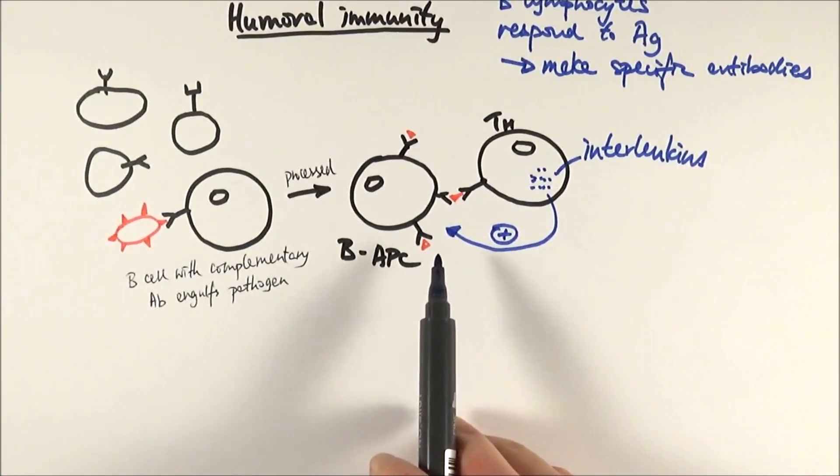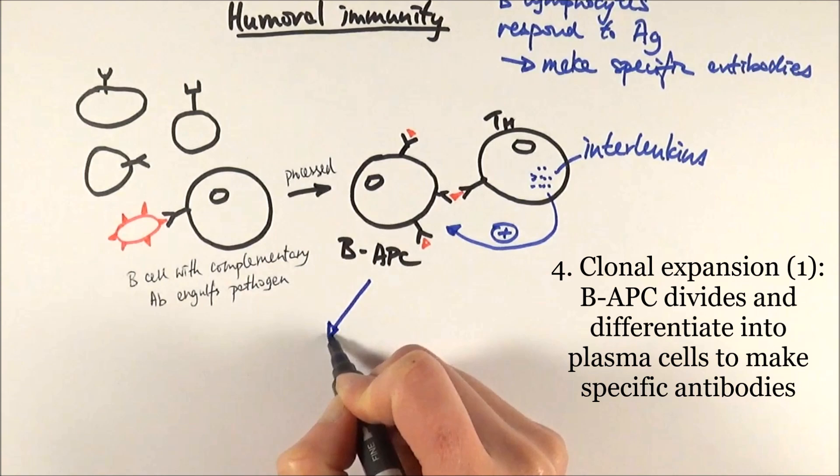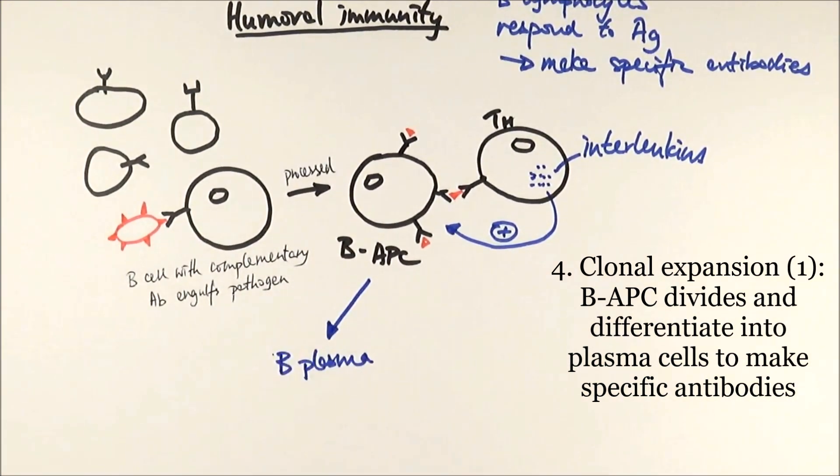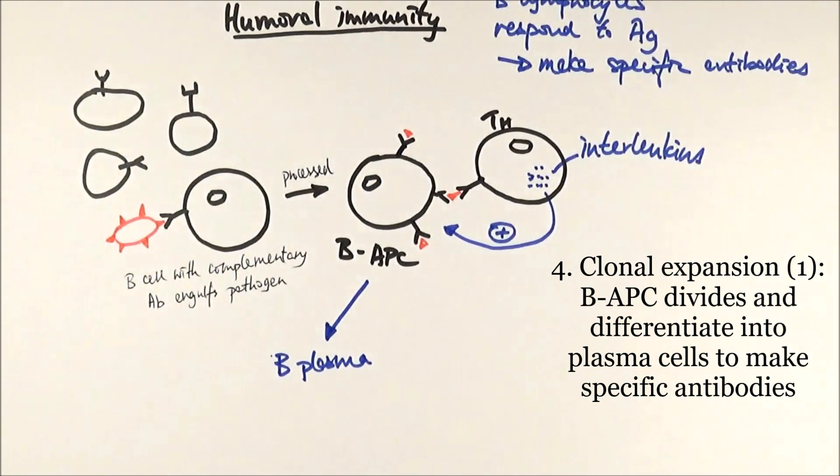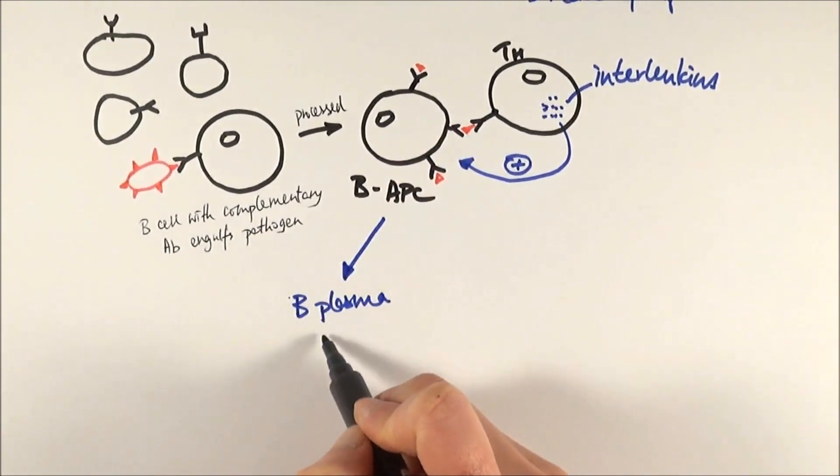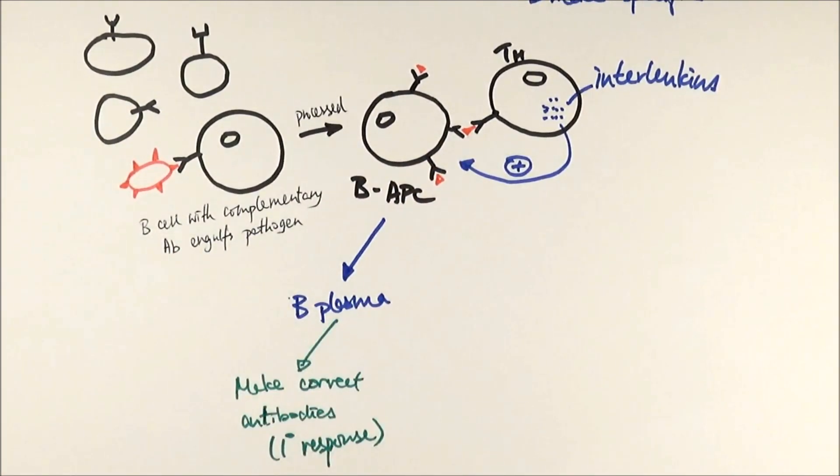This selected B antigen presenting cell will then proliferate and divide by mitosis to make B plasma cells. What they're trying to do is to make sure that they can make lots and lots of that specific antibody. So this antigen presenting cell must be selected. This is what we say the primary immune response.